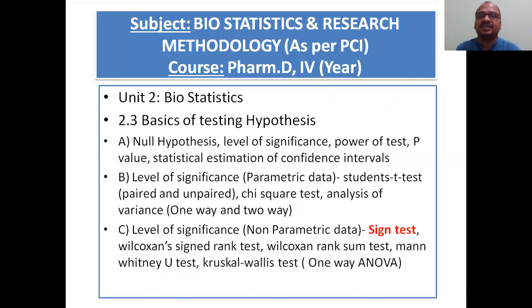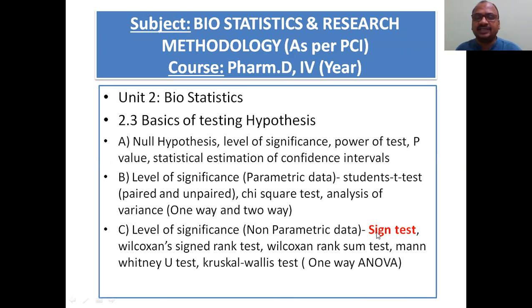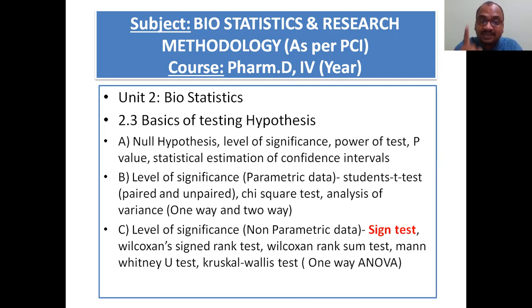This is the common syllabus for all B.Pharm, M.Pharm, Pharm.D, pre-PhD, and PhD students. As per TCI norms for Pharm.D fourth year course, you can see the level of significance and non-parametric tests. The Sign Test comes under the non-parametric test — that is the first point to write in the exam. The Sign Test is hypothesis testing under the non-parametric test category.